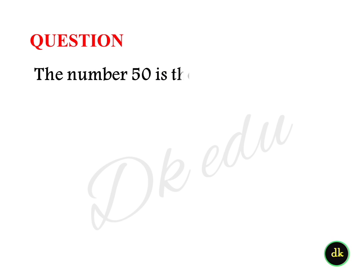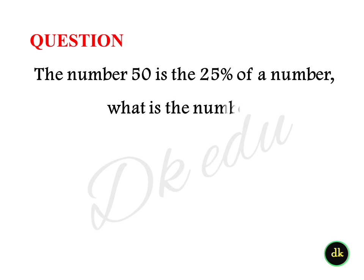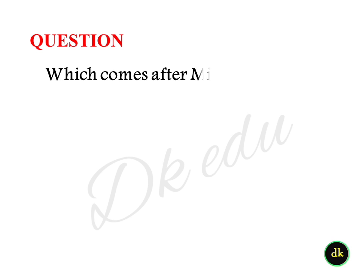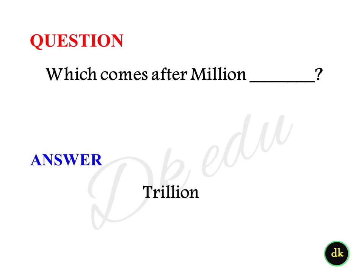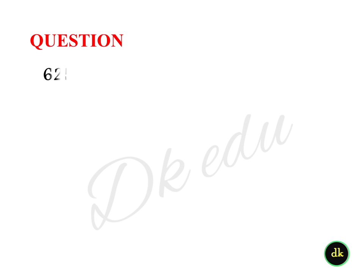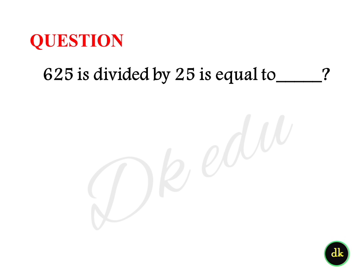The number 50 is 25% of a number. What is the number? Answer: 200. Which number comes after million? Answer: Trillion.